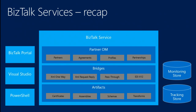So this is a quick recap of BizTalk Services — more like the component layer. The basic building block we have in BizTalk Services today is this concept called bridges. Bridges are the atomic units. They need things like artifacts. Out-of-the-box, we currently support four types of artifacts: certificates, assemblies, schemas, and transforms. You need these to actually get your bridges working in an integration scenario.